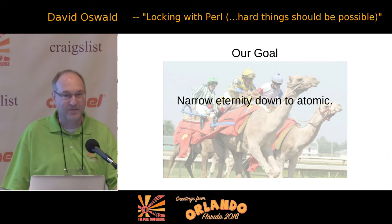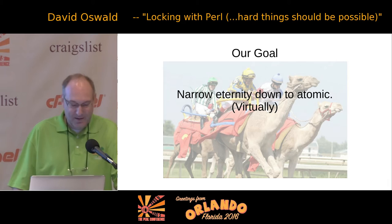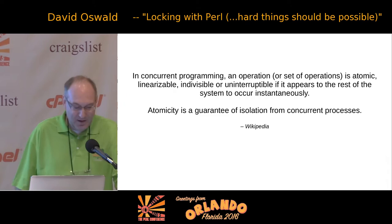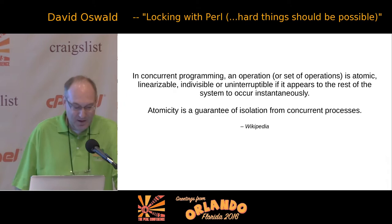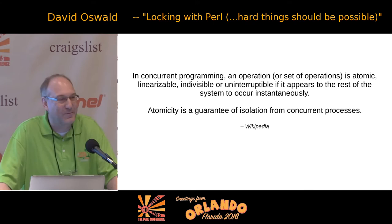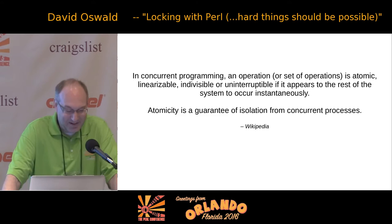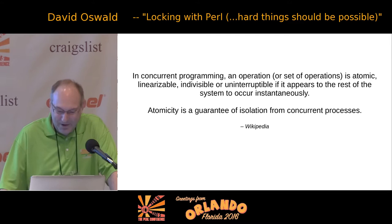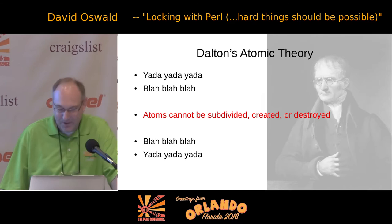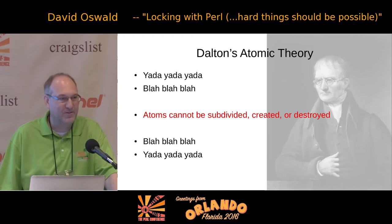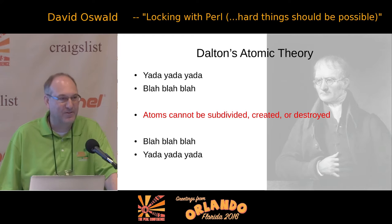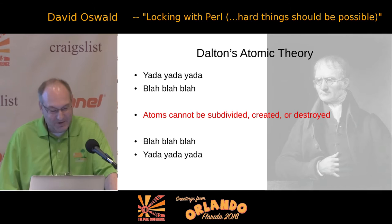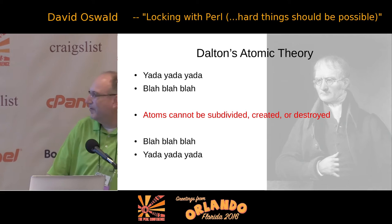Our goal is to narrow eternity down to an atomic operation from the perspective of our program. We can only do that virtually — we can't change how time works. In concurrent programming, an operation or set of operations is atomic, or linearizable, or indivisible, or uninterruptible if it appears to the rest of the system to occur instantaneously. Atomicity is a guarantee of isolation from concurrent processes. Dalton's atomic theory was that atoms cannot be subdivided, created, or destroyed — atoms cannot be split. We're going to work with the pre-atomic era concept of an atom.